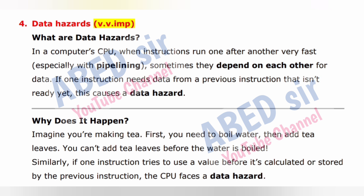Next important long question is 4: What are Data Hazards? In a computer's CPU, when instructions run one after another very fast — especially with pipelining — sometimes they depend on each other for data. If one instruction needs data from a previous instruction that isn't ready yet, this causes a data hazard. Why does it happen? Imagine you are making tea: first, you need to boil water, then add tea leaves.